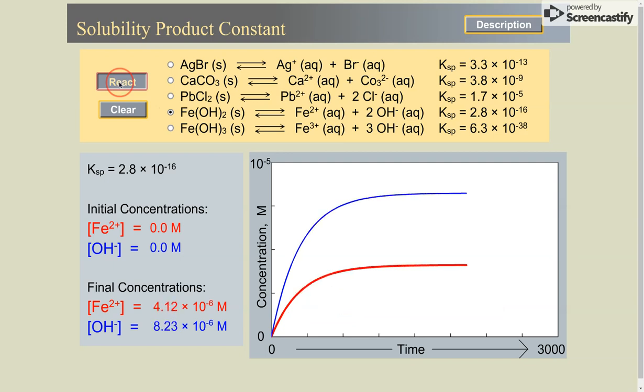But please look at the y-axis. It's 10 to the minus 5, so we don't have very much dissolved, but you will see the pattern of twice the amount of hydroxide formed to iron.